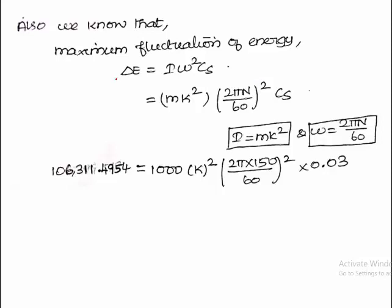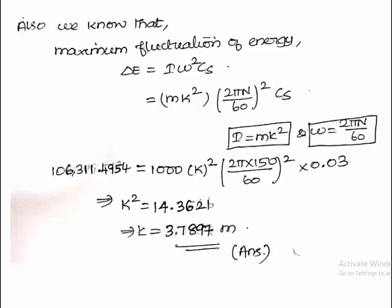We have calculated ΔE as 106,311.4954. Mass of the flywheel is 1000 kg, engine speed is 150 rpm, and coefficient of fluctuation of speed is 0.03. By substituting all the known values in this formula, we can calculate the required minimum radius of gyration of the flywheel K as 3.7897 meter.